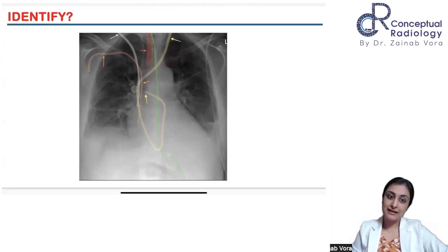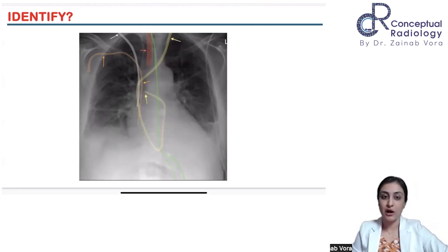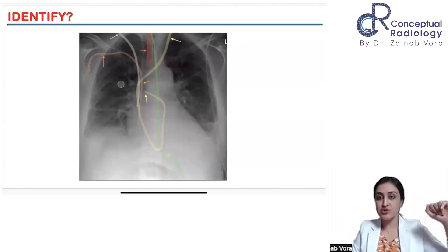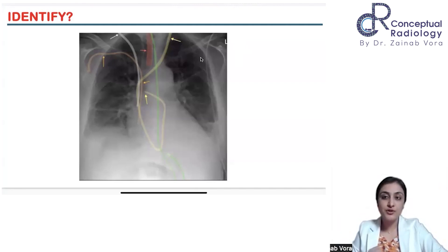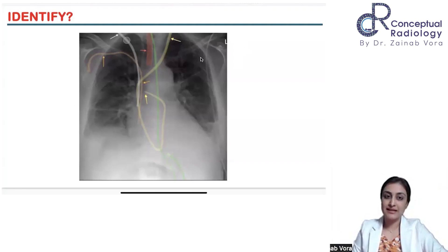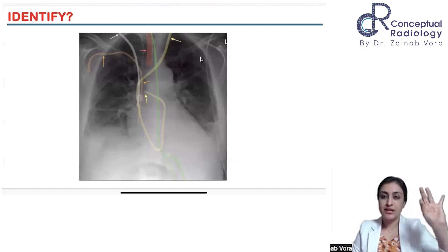The yellow line is a Swan-Ganz or pulmonary arterial catheter. It is placed from the brachiocephalic, going into the right atrium, then right ventricle, up through the right ventricular outflow tract, and into the pulmonary artery. It should be positioned around 2 centimeters from the hilum. If it impinges too much into the hilum, there is a risk of pulmonary arterial injury. The white line is the central line — inserted along the right subclavian — with the tip near the SVC-RA junction.